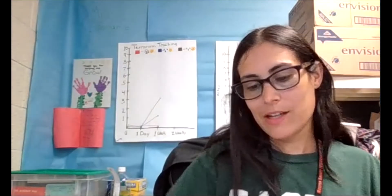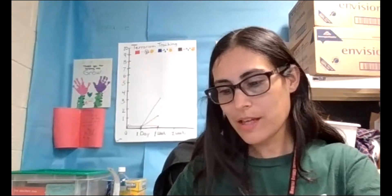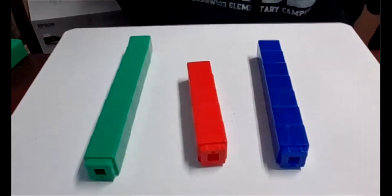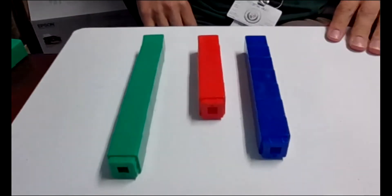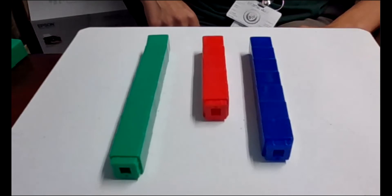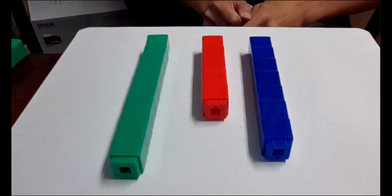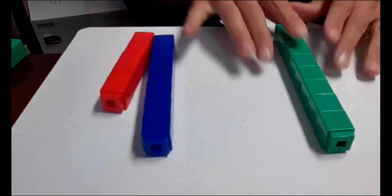We're going to do a little brain work activity. I've got different links of blocks here with me — three different color blocks and there are three different lengths. I want to know which one looks the longest, which color block looks the longest. We're going to put them in order from tallest to shortest. Which one is the tallest block? Green — green is the tallest. We'll put that over here.